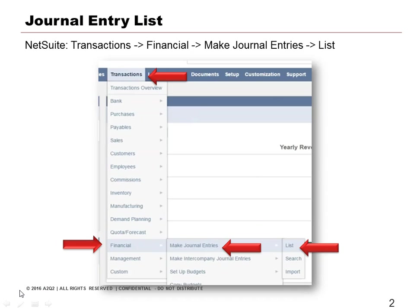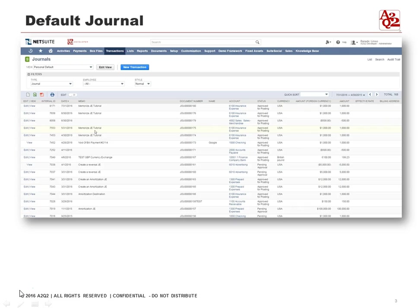Here's a view of the list of journals. It shows the various columns that we've selected to be shown, and it removes some of the columns that we don't want.